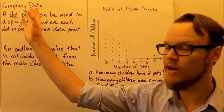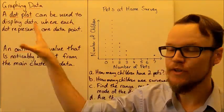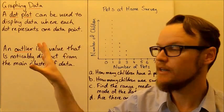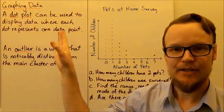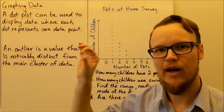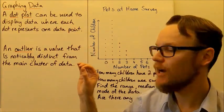Today we're going to look at graphing data. The first graphing technique we're going to look at is called a dot plot. It can be used to display data where each dot represents one data point.